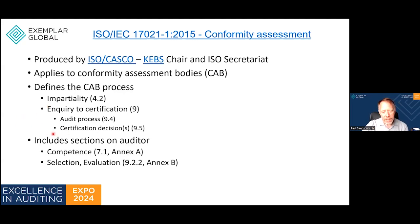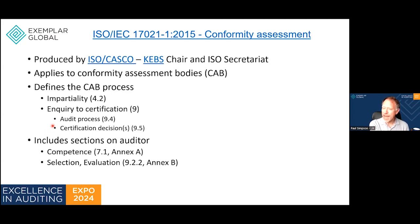They also cover certification decisions. As part of impartiality, when all the work is done there's a pass/fail decision: certificate or no certificate. What 17021-1 says is: take into account what the auditors found, but as a certification body look at that independently across the whole process from inquiry to the certification decision. Have our auditors done a good job? Has the team sent in got the necessary competence? That sounds late, but it is part of the certification decision — have we sent the right team and have they done a good job?